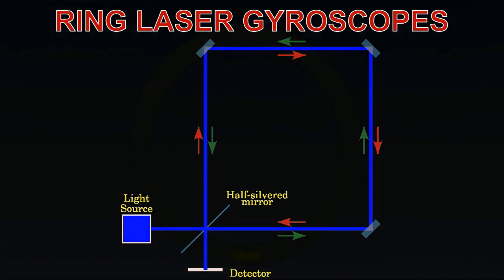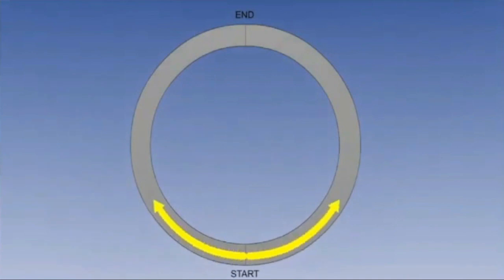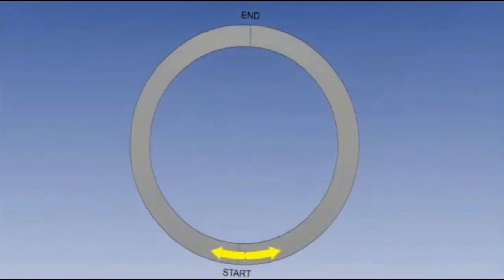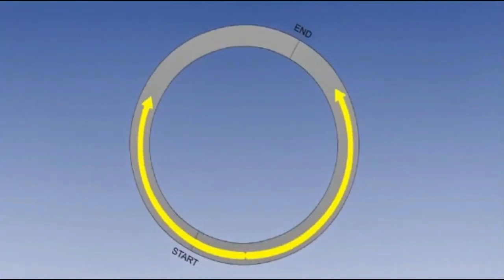At rest, both beams should arrive at the detector at the same time, in the same phase. Sagnac discovered that if the frame now starts a rotation, one beam of light takes longer to go around the loop than the other. The rate of turn can be measured by the gap in time between the beams of light arriving at the detector.